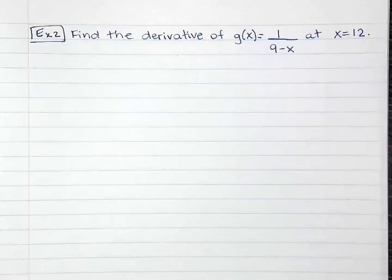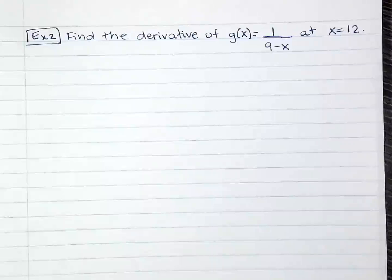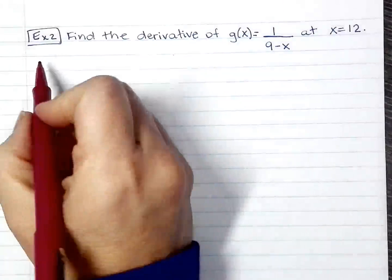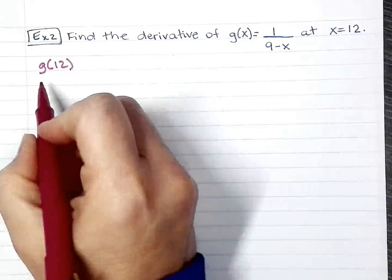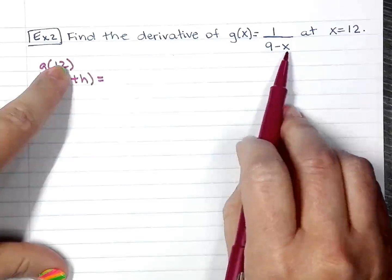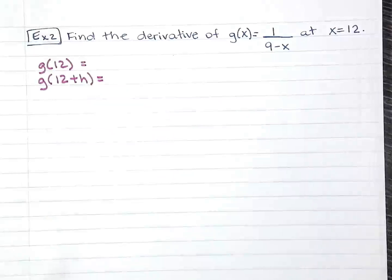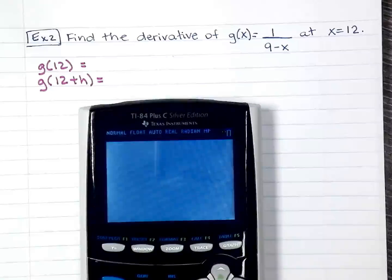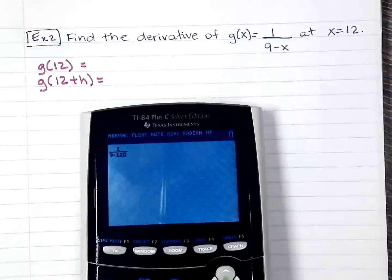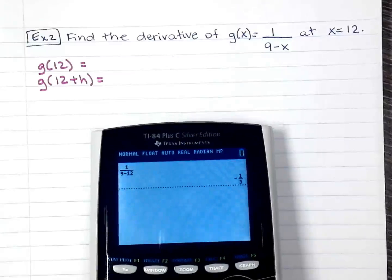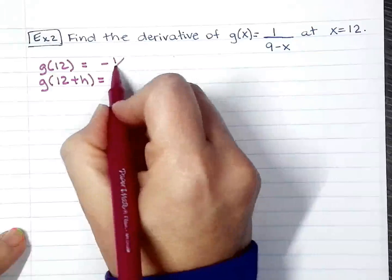Again, we've found this limit over similar stuff, but now since we're doing derivatives using limit, I'll just review this with you. So from the formula, you know I'm going to have to find g(12) and g(12+h). Substitute 12 right there where x is. So I have 1 over 9-12. So you just simply get -1/3. That's the easy one. So -1/3.